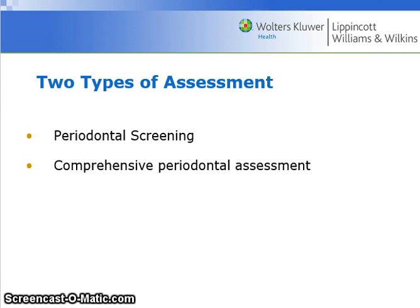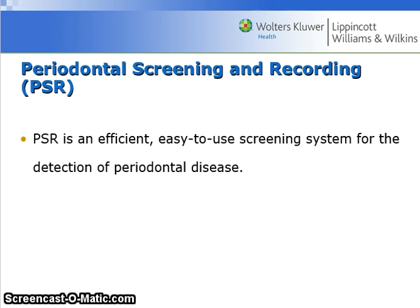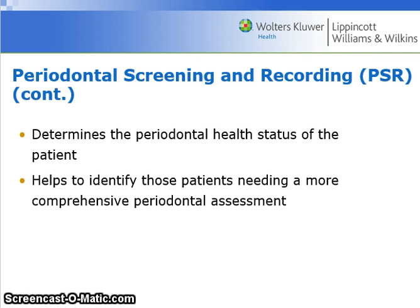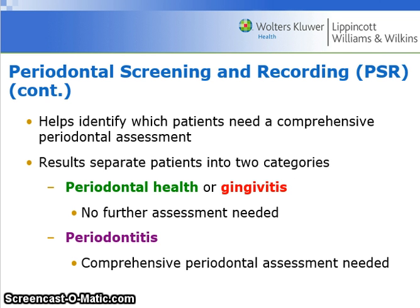There are two types of assessment: the periodontal screening and the comprehensive periodontal assessment. Periodontal screening and recording, or PSR, is an efficient, easy-to-use screening system for the detection of periodontal disease. It determines the patient's periodontal health status and helps identify those patients needing a more comprehensive periodontal assessment.